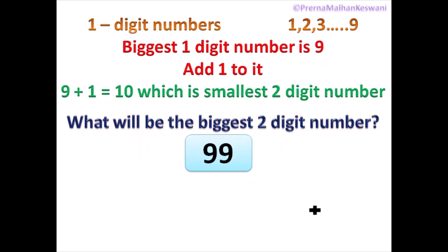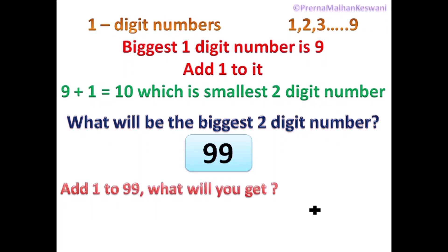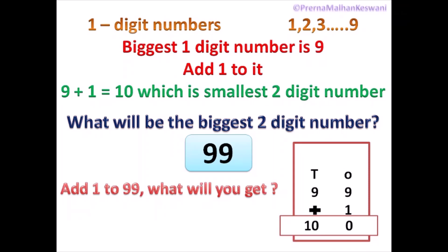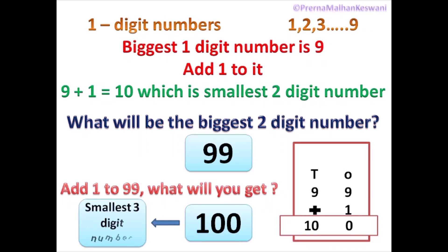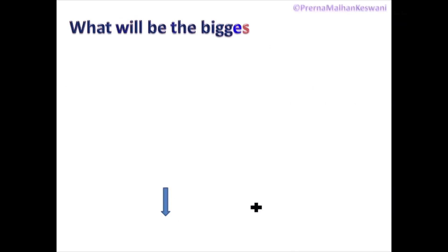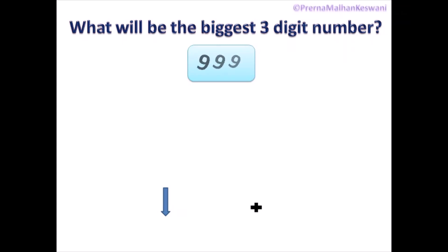Now, what will happen if you add 1 to 99? 99 is a two-digit number. When you add 1 to 99, you will get 1, 0, 0 — which is a three-digit number. It is 100, and it is the smallest three-digit number. Can you tell me which is the greatest three-digit number? Think. Yes, you are right. It is 999.